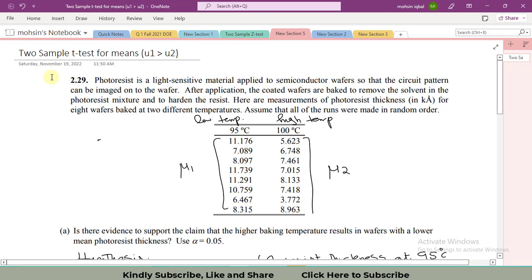Hi, this is the second part of the video for two sample test for means for a special case where mu1 is greater than mu2, a unidirectional t-test.